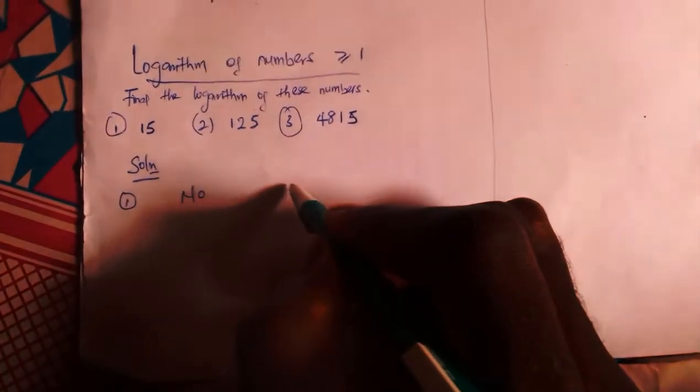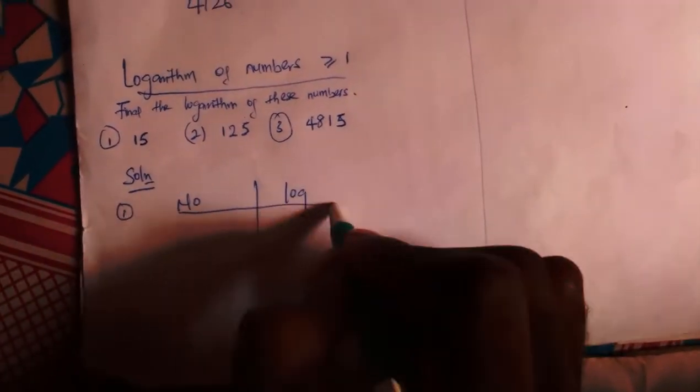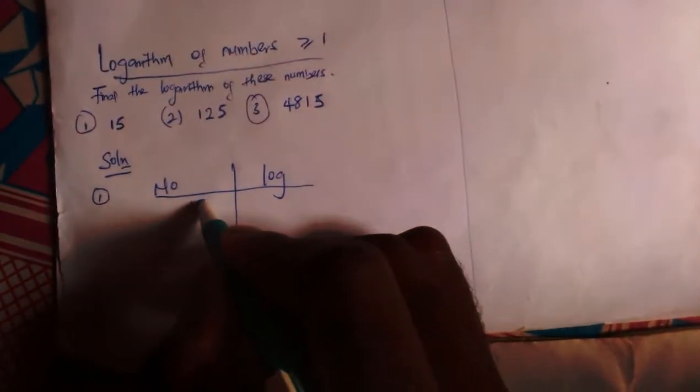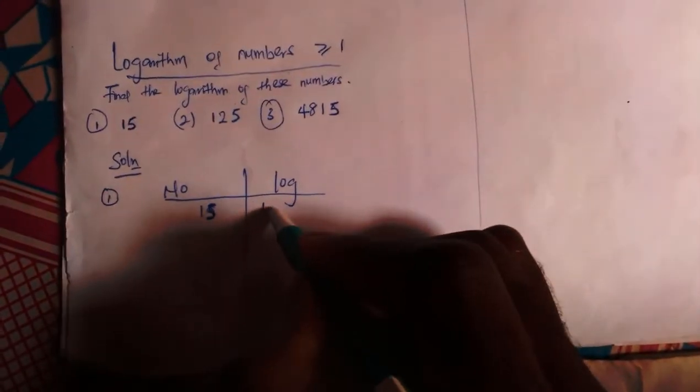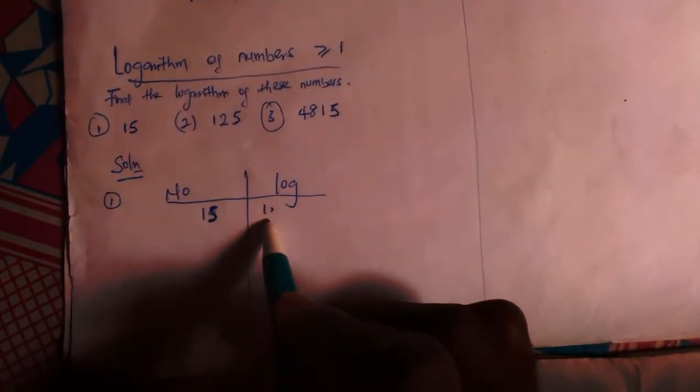The first thing you have to do is draw your number and log table. The number is 15. What is the logarithm? Don't forget to get your logarithm, you need the characteristic first. What is characteristic of 15? That is 1 point. Why? Because if I count, this is 2, subtract 1 you get 1 point.